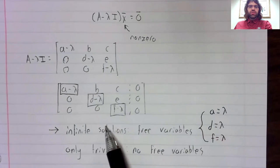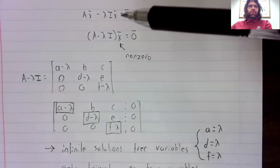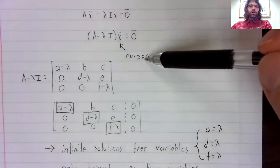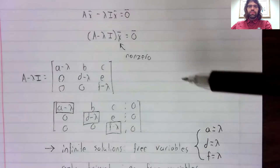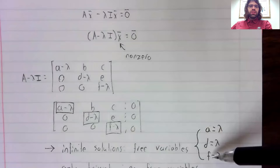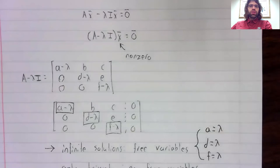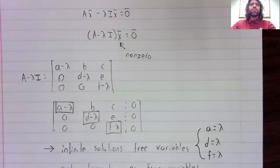So there are three values of lambda that give us infinitely many solutions and therefore give us non-trivial solutions. And these are therefore the eigenvalues, just like we wanted.